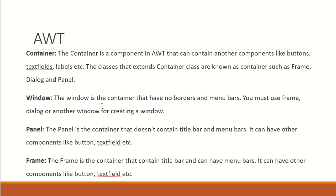Window is another type of container but it has a small difference - it doesn't have any border or menu bars, unlike what we see in GUI applications. A window will not have any menu bar or any particular borders. So if you want to create a window, you will have to use either a frame, a dialogue, or another window. Panel is a container that will not contain a title bar or a menu bar, but it can contain elements like buttons and text fields. Frame is the most commonly used container in AWT - it contains a title bar, can have menu bars, and can contain any other components.